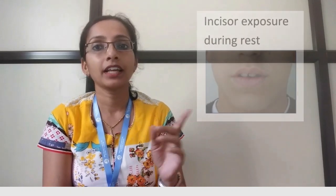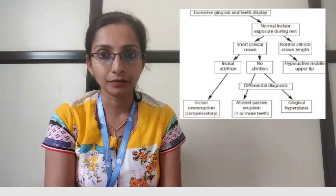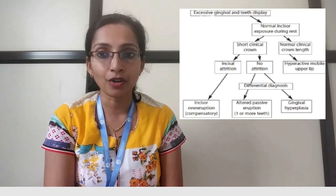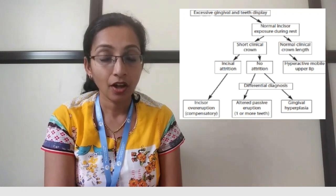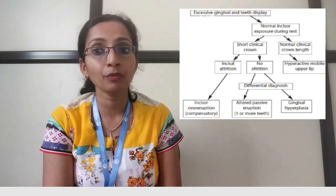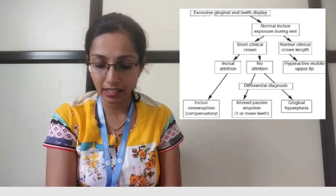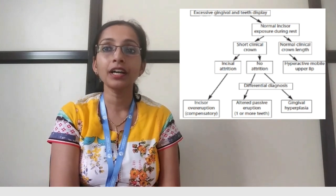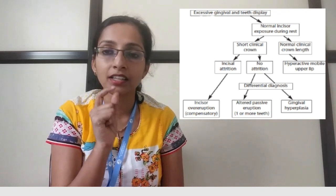Before presenting the flowchart, you need to know that the normal incisor exposure during rest is around 3 to 4 mm. Using this flowchart: if you have gummy smile but normal incisor exposure at rest, it is either because of a hyperactive upper lip, or because the crowns are short — either due to attrition, or if there is no attrition, due to altered passive eruption or gingival hyperplasia.